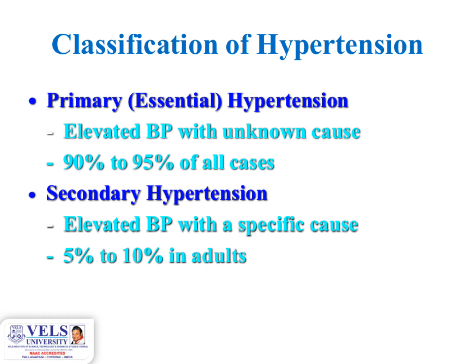Coming to the classification of hypertension, it is classified into two types: primary or essential hypertension, and secondary hypertension. Primary hypertension is the elevation of BP with an unknown cause, accounting for 90% to 95% of all cases. Secondary hypertension is elevated BP with a specific identifiable cause, accounting for 5% to 10% of adults.